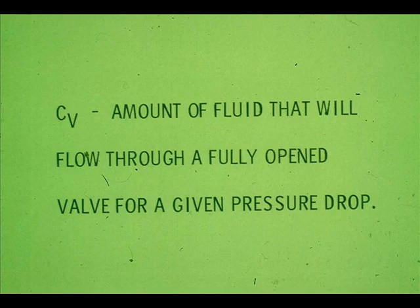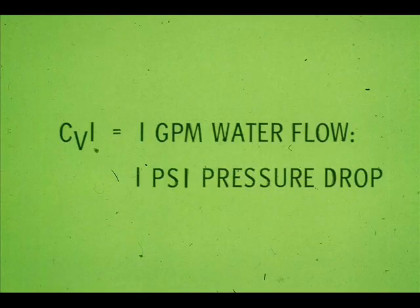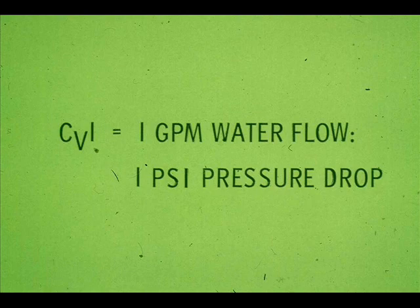Flow coefficient, or Cv, is the yardstick for valve sizing. Cv is the amount of fluid that will flow through a fully open valve for a given pressure drop across the valve. A Cv of one means one gallon per minute of water will flow through a fully opened valve that has a one PSI pressure drop across it.